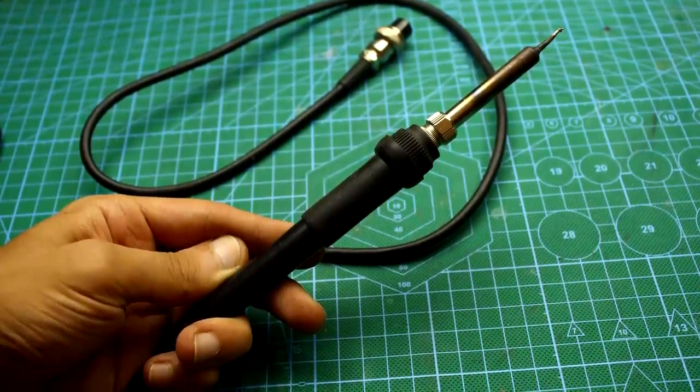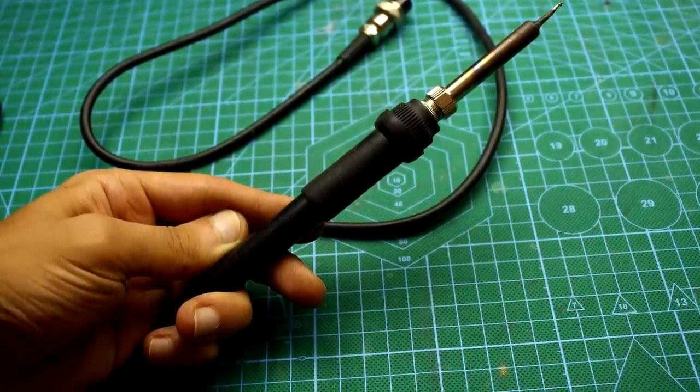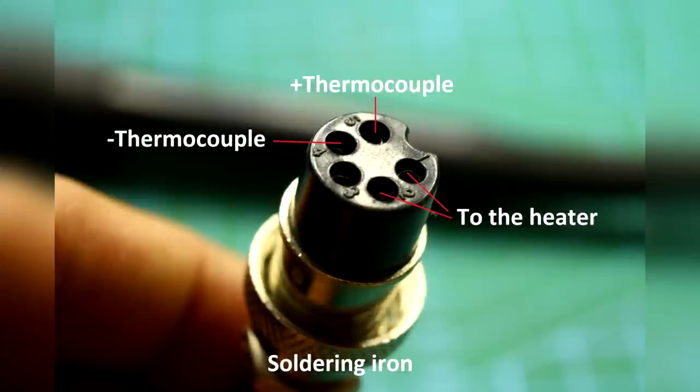In common soldering irons which are used in the 936 stations, there are four main outputs, two for a thermocouple, two for a heater.